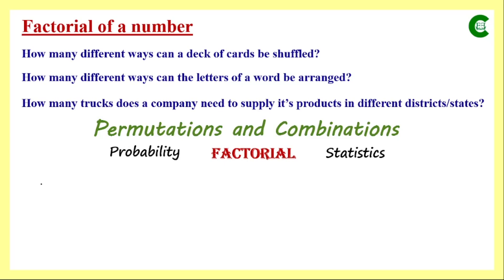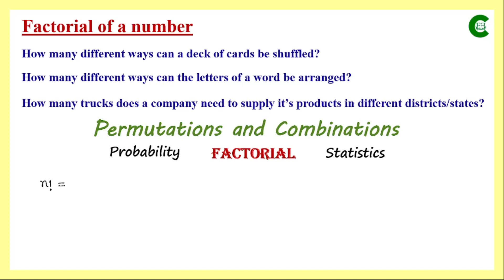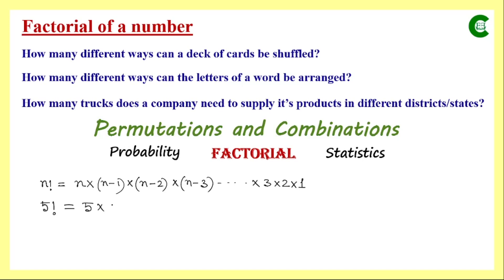We are all aware of how mathematically we find the factorial of a given number. If the number is n, then the factorial is calculated by multiplying n by all subsequent numbers down to 1. For example, to find the factorial of 5, we calculate 5 × 4 × 3 × 2 × 1, which equals 120.